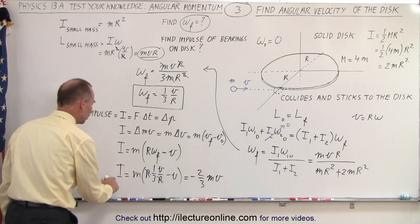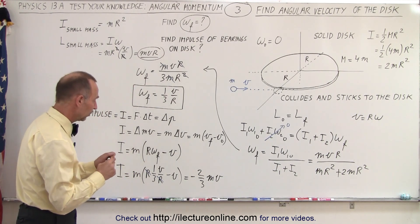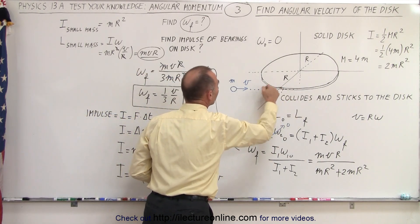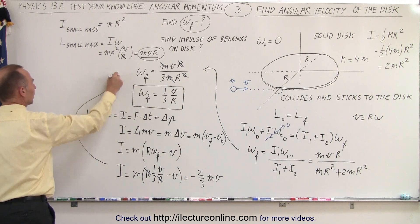So that would be the impulse on the ball, right? Because the ball collides with the disc. That would be the impulse onto the ball. And then we can say that we're not quite done yet.